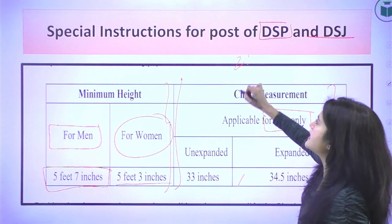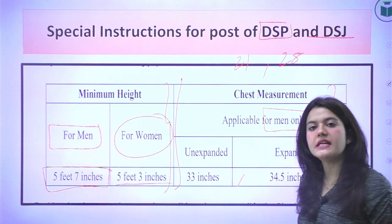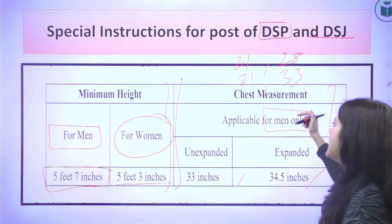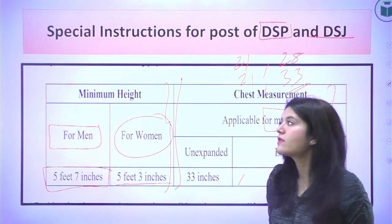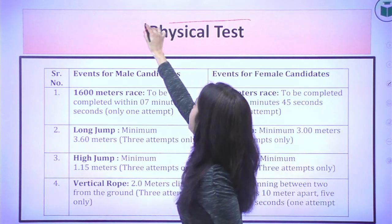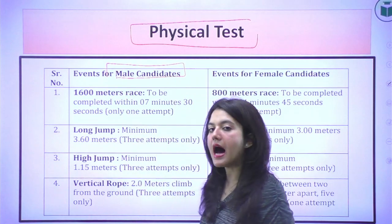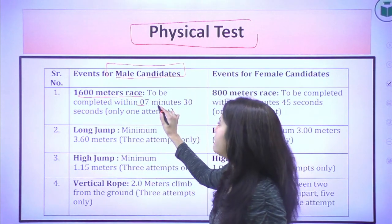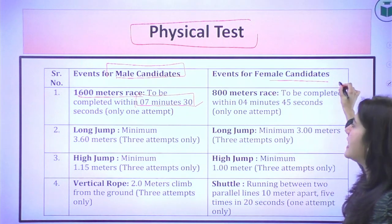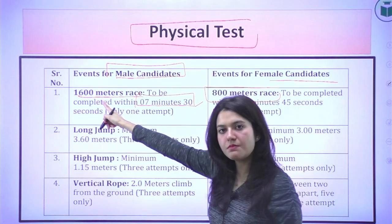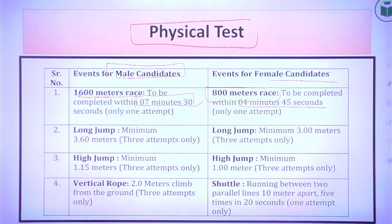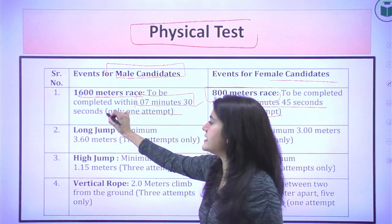For the physical test for DSP and DSJ: male candidates must complete a 1600-meter race within 7 minutes and 30 seconds. Female candidates must complete an 800-meter race within 4 minutes and 45 seconds. There is only one attempt allowed — no second chances.